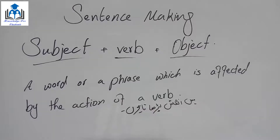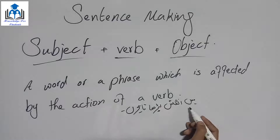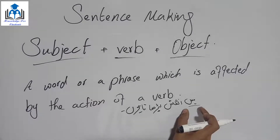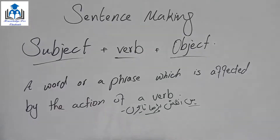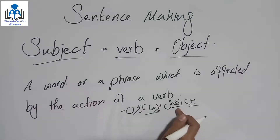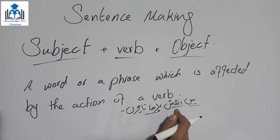For example: 'مैं English पढ़ता हूँ' (I read English). Here 'मैं' = subject, 'पढ़ता हूँ' = verb. But what am I reading? The action of reading is happening on 'English' — so 'English' is the object here.